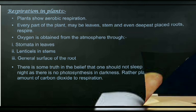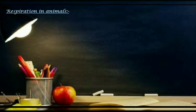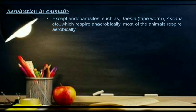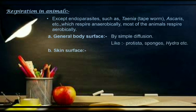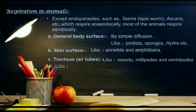Now, respiration in animals. All animals on Earth — whether unicellular like hydra or multicellular like elephants — respire. Except endoparasites like Taenia solium and Ascaris, which respire anaerobically. Respiration occurs through the general body surface by simple diffusion in organisms like Protista, sponge, and hydra. Amphibians use skin. Insects and millipedes use trachea. Aquatic animals like prawns, mussels, fish, and tadpoles use gills. Human beings, reptiles, and birds use lungs.